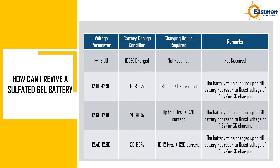How can I revive a sulfated gel battery? If voltage is ≥13V, the battery will charge to 100% with no additional charging hours required. If voltage is 12.80–12.90V, the battery will charge 80–90% with 3 to 5 hours at C20 rate; charge until boost voltage of 14.8V is reached using CC charging. If voltage is 12.60–12.80V, the battery will charge 70–80% with 8 hours at C20; charge until boost voltage of 14.8V is reached. If voltage is 12.40–12.60V, the battery will charge 50–60% with 10 to 12 hours at C20 current; charge until boost voltage of 14.8V is reached using CC charging.